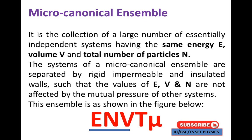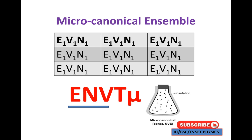For the micro-canonical ensemble, we use isolation, volume V, and the energy is fixed at all times. The energy is constant, the volume is constant, and the number of particles N is constant. If we show system 1 with variables E1, V1, N1, then we are showing the micro-canonical ensemble system with three variables E, V, N held constant.